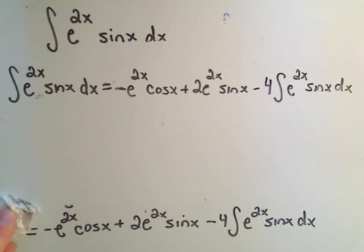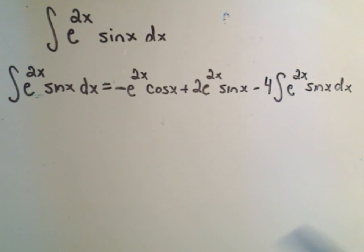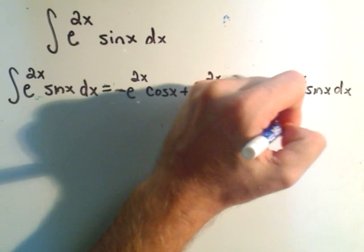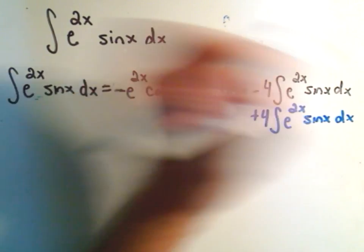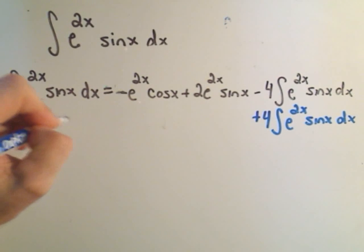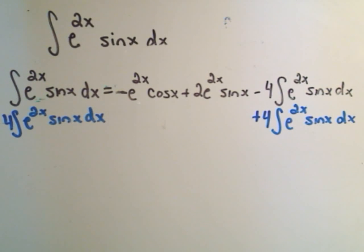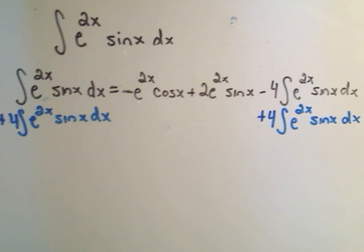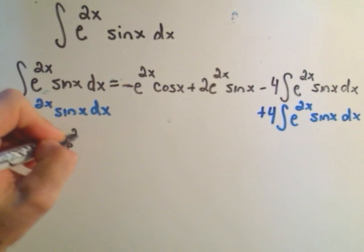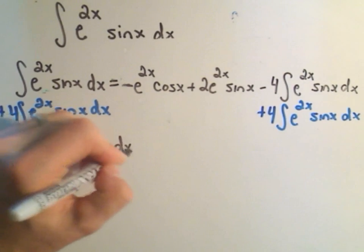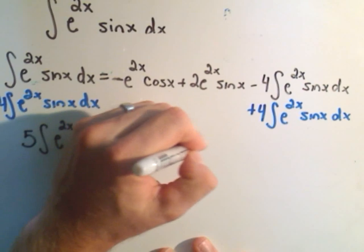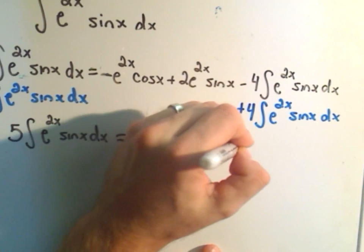Well, the idea is we can get rid of this integral on the right-hand side by simply adding it to both sides. So I'm going to add 4 times the integral of e to the 2x sine x dx to the right side, which means I've got to do it to the left side as well. e to the 2x sine x dx. Well, if I have one e to the 2x sine x and I add on another 4 of those, what I have on the left side now is 5e to the 2x sine x dx. And notice on the right side, there's no more integral now. We have negative e to the 2x cosine x plus 2e to the 2x sine x.